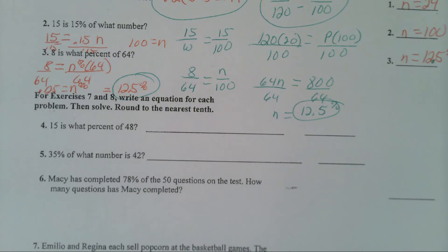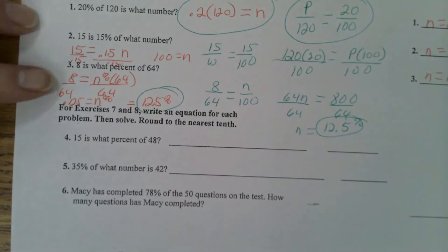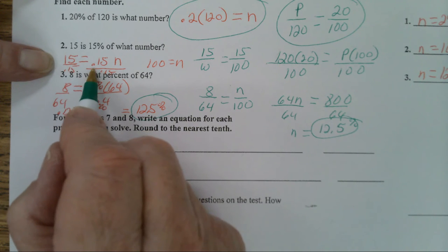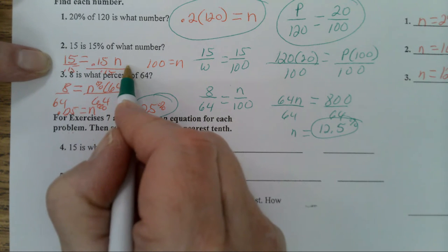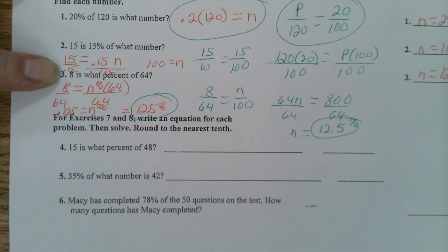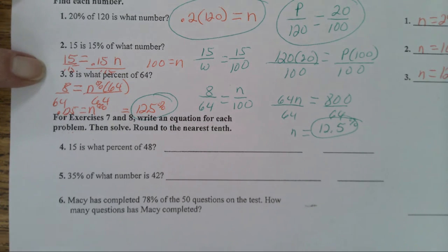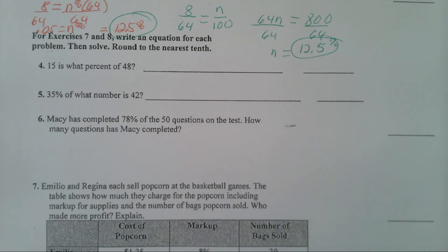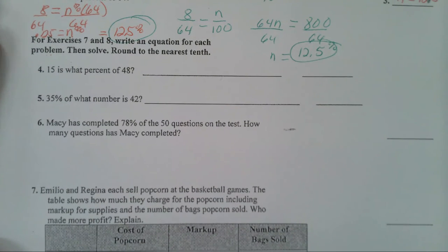Connor. Number two, I did 15 times 0.15 and I got 2.25. Your equation's not written correctly then. 15 is means equals 0.15 times N. To undo multiplying, you divide both sides by 0.15. That's right. Yes, that's what I have there. Okay, number four. Now in this group it says write an equation for each problem. So this one you have to do equations, round to the nearest tenth.